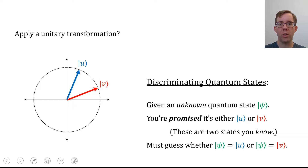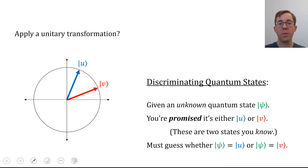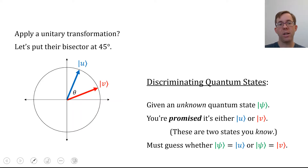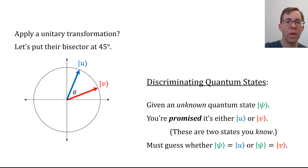We know how to do two things in quantum: apply a unitary transformation of your choice, and measure. A unitary transformation is basically a rotation or reflection. If you apply one to state psi, it preserves its length and the angles between any two states. This means you can rotate psi so that u and v become any two states you prefer that have the same angle theta as initially. We can apply a unitary so that u and v have their bisector at 45 degrees.